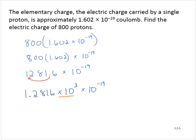These numbers have the same base and we're multiplying, so we will add the exponents. 1.2816 times 10 to the negative 16th power, and the units would be coulombs.